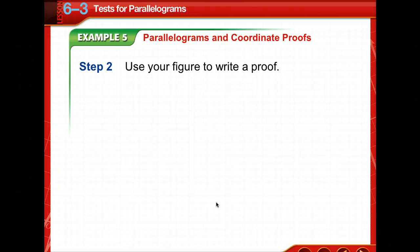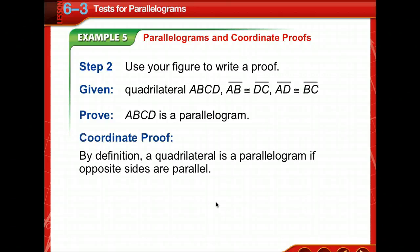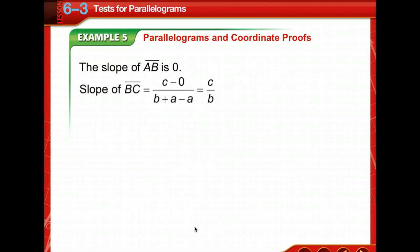We're going to use the figure to write a proof. We're given that it's a quadrilateral and that AB is congruent to DC and AD is congruent to BC. By definition, a quadrilateral is a parallelogram if opposite sides are parallel. So we're going to use the slope formula. The slope of AB is 0. We've got horizontal line there. As well as CD is 0.